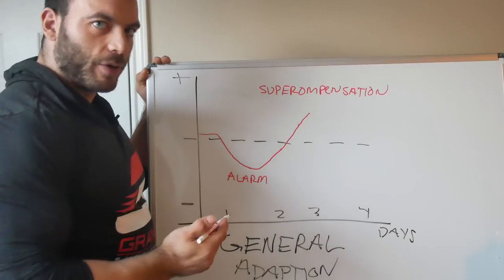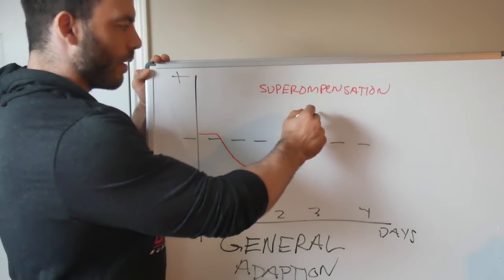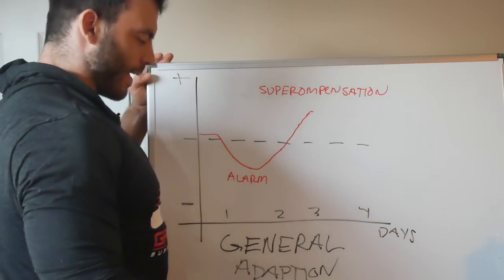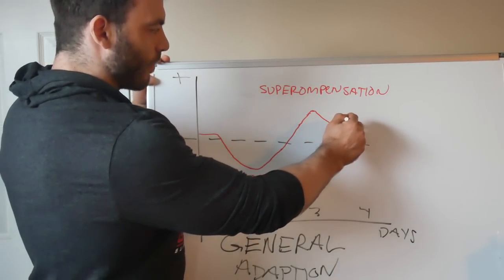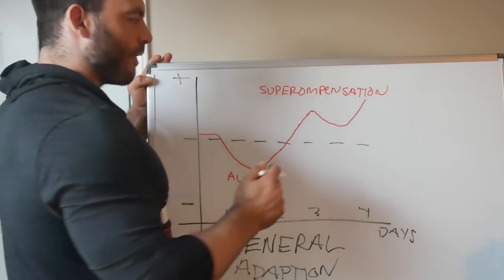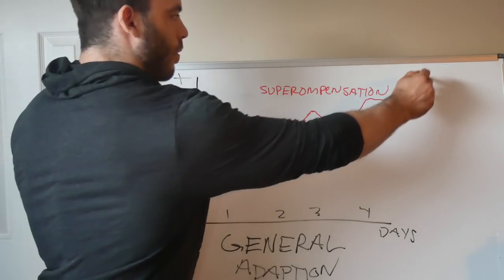So, ideally what you do is your performance starts to climb like this, here you train again. And so if I train again, my performance will dip, and then it'll start to go back up. And if I can just keep doing that, it'll go up and up and up.